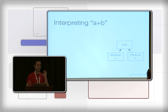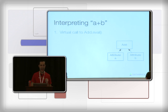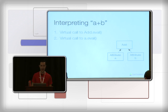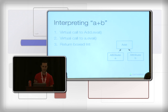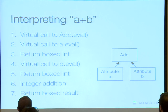Expression evaluation can be incredibly expensive in a database. Consider evaluating A plus B: you call eval on the top node of the expression tree, it makes a virtual function call to its child to get a value, which returns a boxed integer — allocating an object just to hold that value. Then another virtual function call to B returns another boxed value. Then you do a single integer addition, which was the actual work. Then you box again. That's pretty expensive — we can do better.